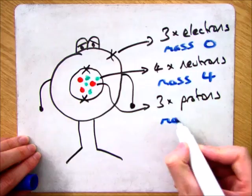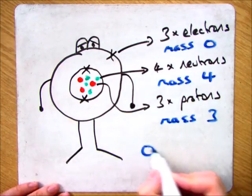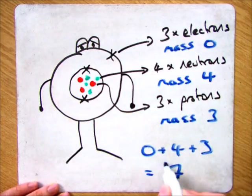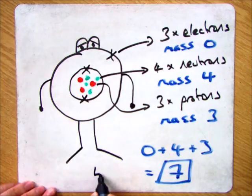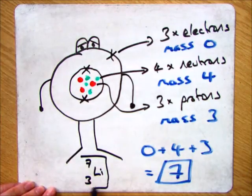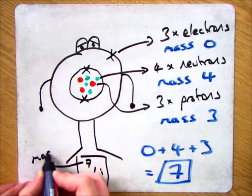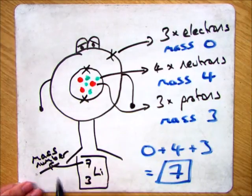So we have 3 electrons, 3 times 0 is 0, 4 neutrons, 4 times 1 is 4, and 3 protons, 3 times 1 is 3. Add all those together, you get 7 which as you can see from the actual atom is the mass number. So that mass number is the number of protons and neutrons added up in the centre.